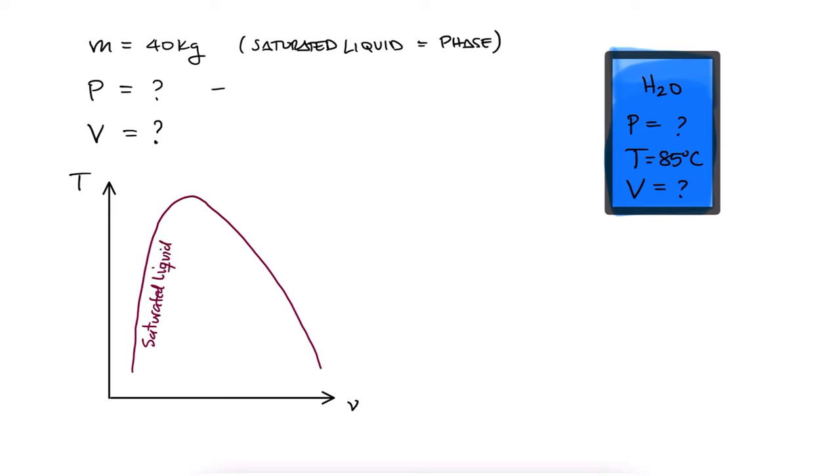This means that the pressure is the saturation pressure and that to find the volume, we can use the given mass and write down the specific volume of a saturated liquid, or what is the same Vf. Since what we have is the temperature, we go to the saturated liquid vapor mixture by temperature table.